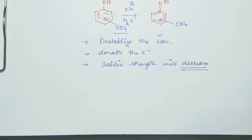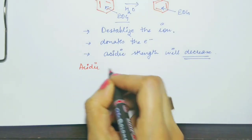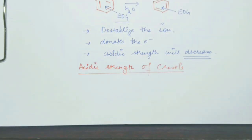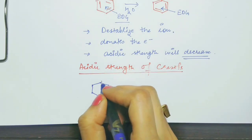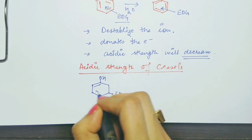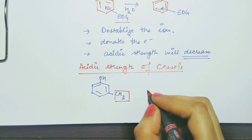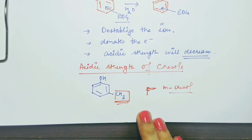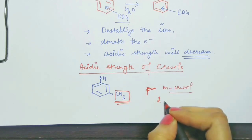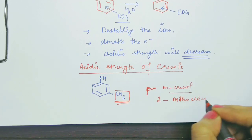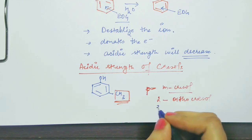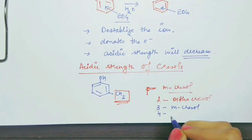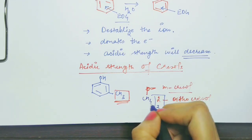The electron donating group donates electrons to the phenoxide, due to which acidic strength will decrease. For this we are taking some examples — the cresols. Cresols are formed when benzene is attached with an electron donating methyl group. This is para-cresol, this is meta-cresol, and if the position of methyl is 2 that is ortho-cresol, position 3 is meta-cresol, position 4 is para-cresol.